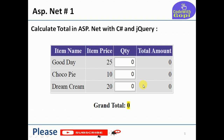Hi, welcome to my channel. In today's session we will see how to calculate totals in ASP.NET with C# and jQuery. This is my first example in ASP.NET. We will create one GridView, bind some items with fixed prices, and whenever the quantity is entered by the user, it should display the total amount for each product and also the grand total bill amount.